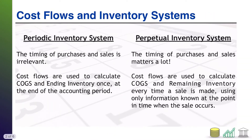Cost flows are interesting because no matter which type of system you have — periodic or perpetual — the cost flow conceptually still works the same way. For instance, in the example of first in first out (FIFO), you always pull your earlier inventory as what has sold and the later inventory is what remains. LIFO being the opposite: later inventory is what is sold, earlier inventory remains. Conceptually, cost flows will behave the same regardless of what inventory system a company uses.